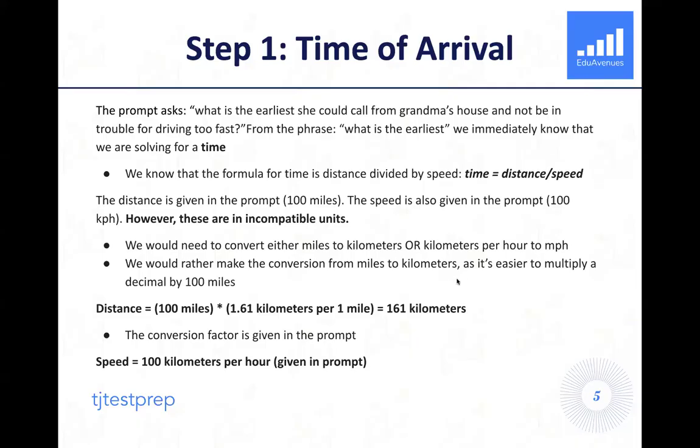I think we'd rather make the conversion from miles to kilometers here, so converting the distance, as it is far easier to multiply a decimal by 100 miles rather than dividing 100 kilometers per hour by a decimal. So our distance could be 100 miles times 1.61 kilometers per one mile. So that is 161 kilometers as our distance. And you might be wondering, how did we get this conversion factor? In all of our courses, we actually have a PSE formula and units cheat sheet where all of these conversions show up. And in this particular prompt, TJ Admissions decided to be pretty nice to students. They gave students this conversion factor within the prompt itself. So for this particular year, students would not have had to memorize it.